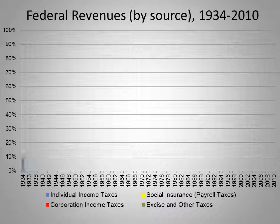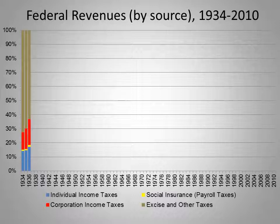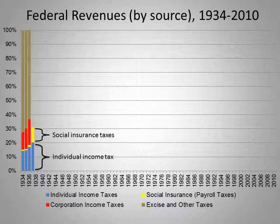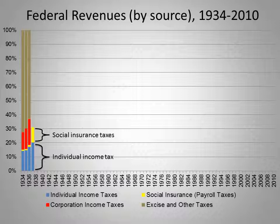This graph shows how the source of federal revenues has changed over time. The blue bar is the individual income tax, which in the late 1930s accounted for about 20% of federal revenues. The yellow bar is the payroll tax, collected from employers and workers to pay for Social Security and unemployment insurance, and later Medicare. This was about 10% in the late 1930s, still fairly early in the history of those programs.